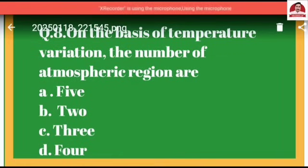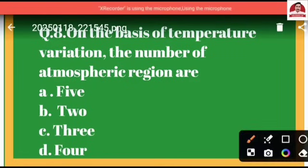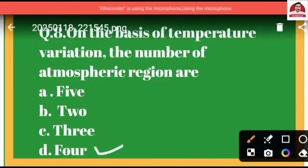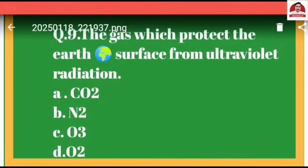The correct option is D, because we have four regions in which temperature variations occur.